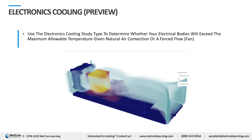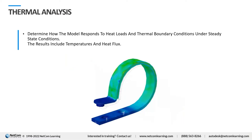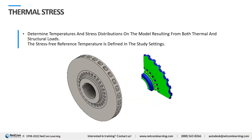Next is thermal analysis. If you want to check the effect of temperature on a body, you can perform this type of analysis in Fusion 360. We have both thermal analysis and thermal stress analysis — a combination of stress and temperature analysis — where you can determine temperature and stress distributions on the model resulting from both thermal and mechanical loading.